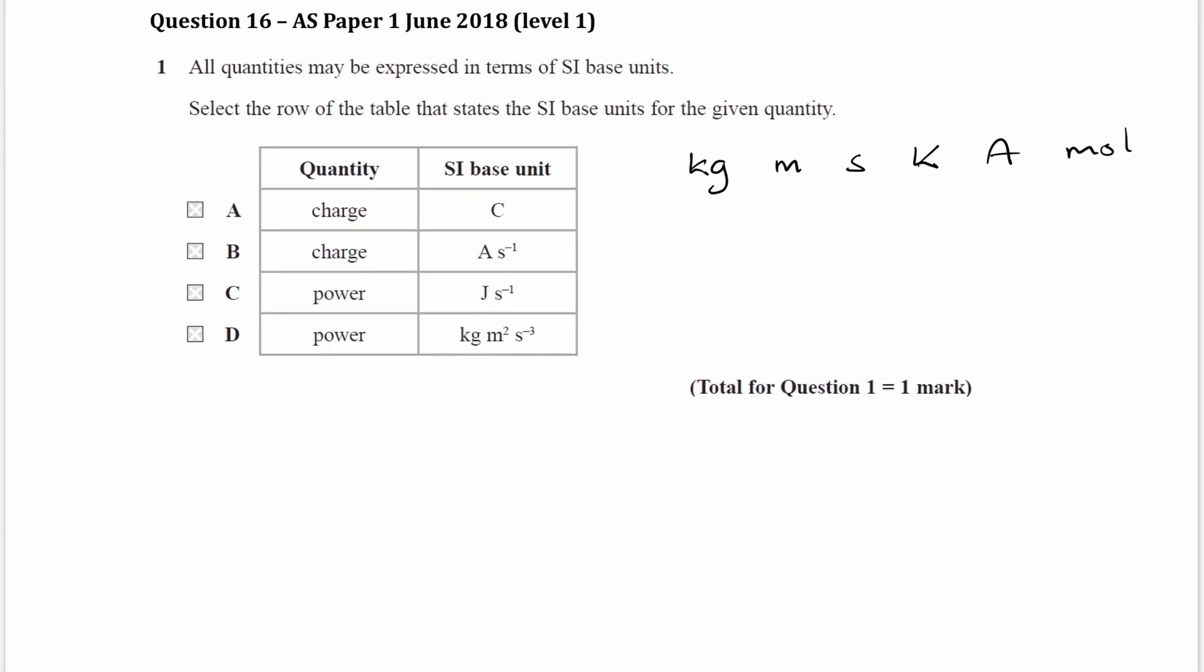We can immediately eliminate some things. We can eliminate A, we know it's not going to be that because coulombs is not an SI base unit, and we can eliminate C as well as joules is not an SI base unit. So it's either going to be B or D.